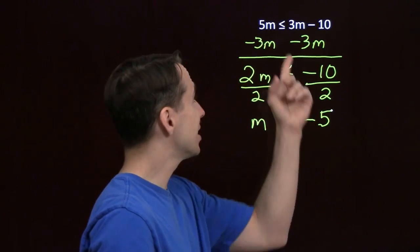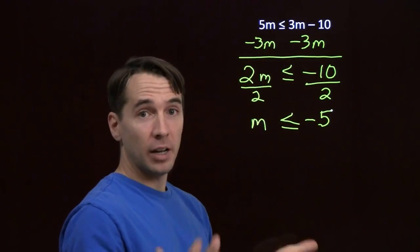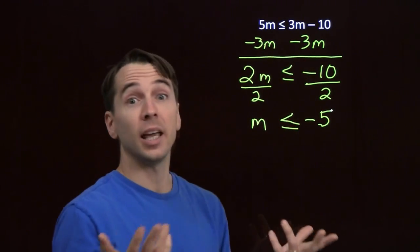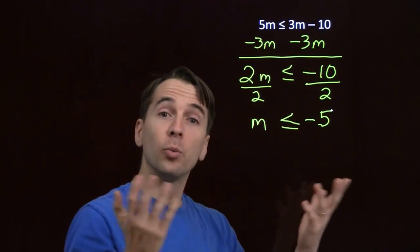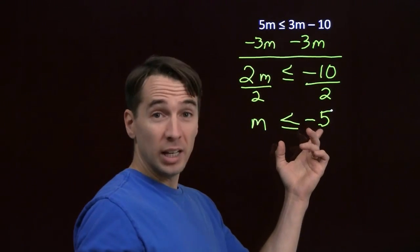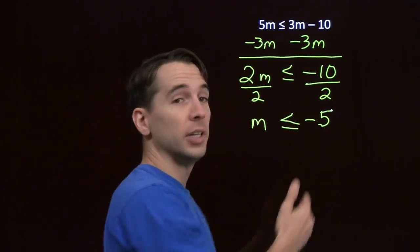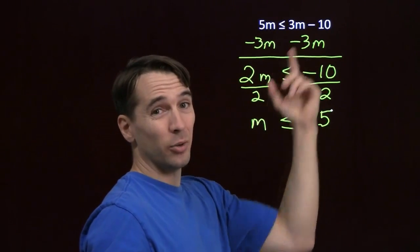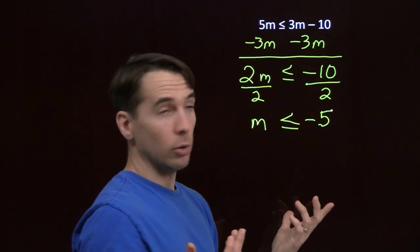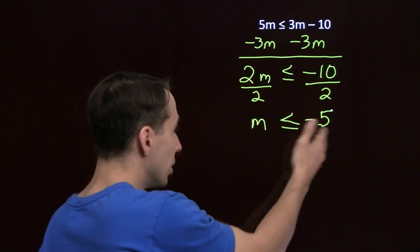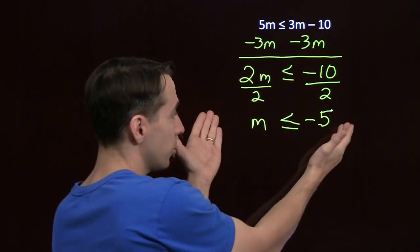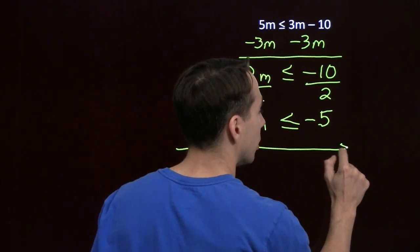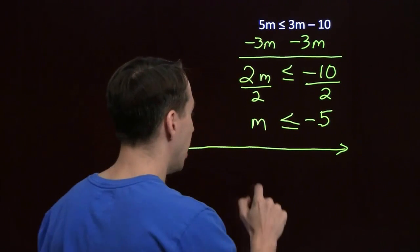We can test this by sticking negative 5 in. 5 times negative 5 is negative 25. On the right, 3 times negative 5 is negative 15, minus 10 is negative 25. Sure enough, the two sides are equal, and we're allowed to have them equal — so negative 5 is a solution. But if we try something greater than negative 5, like 0, we get 0 on the left and negative 10 on the right. 0 is not less than or equal to negative 10, so 0 is not a solution, which is exactly what our solution m less than or equal to negative 5 tells us.